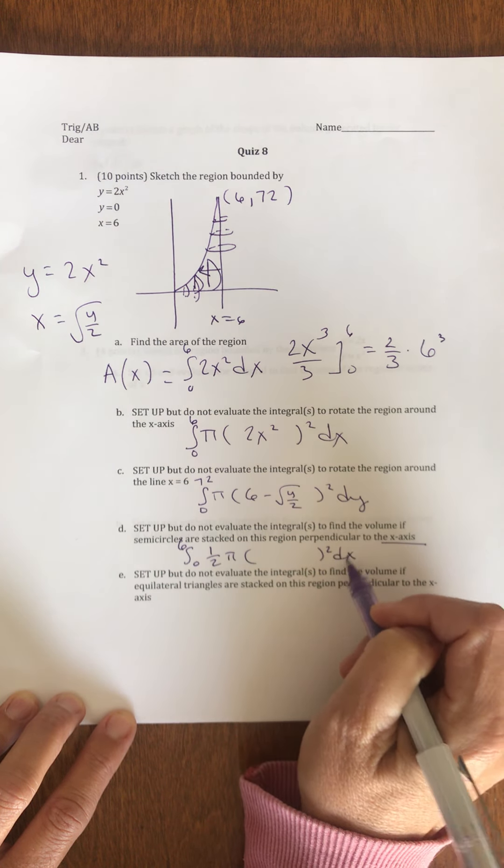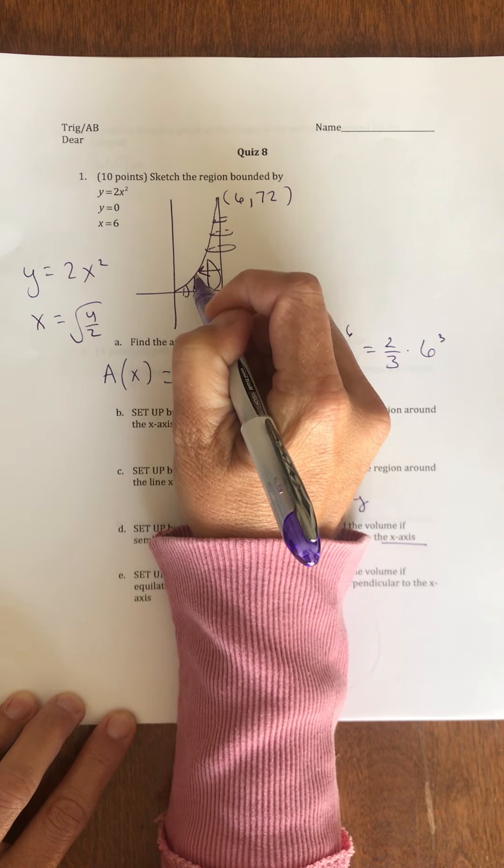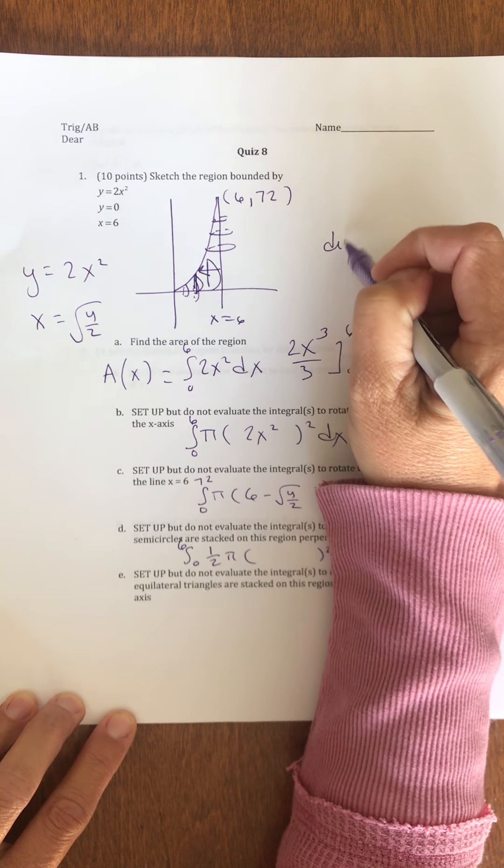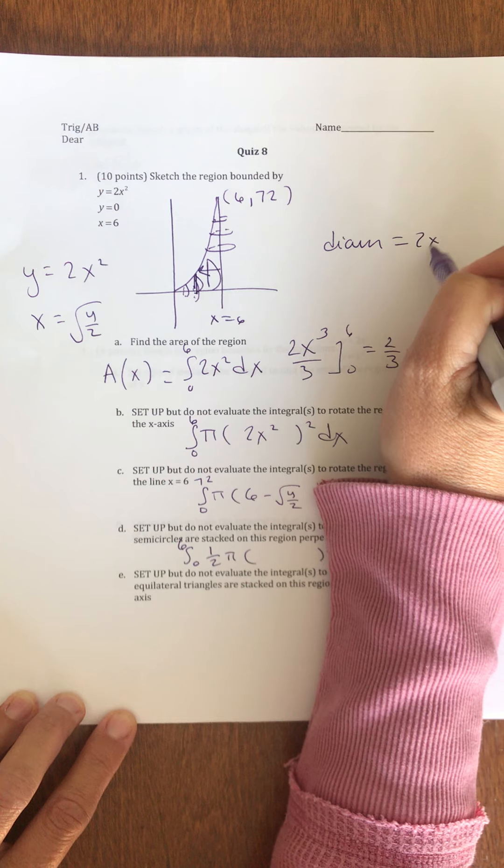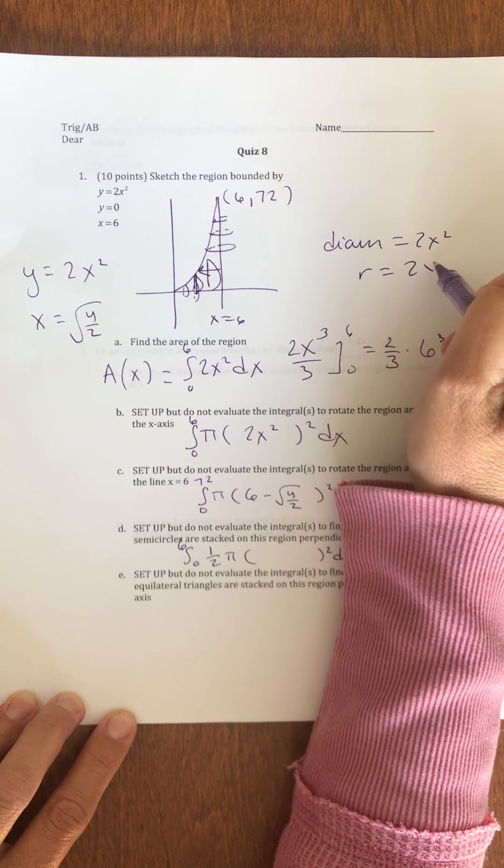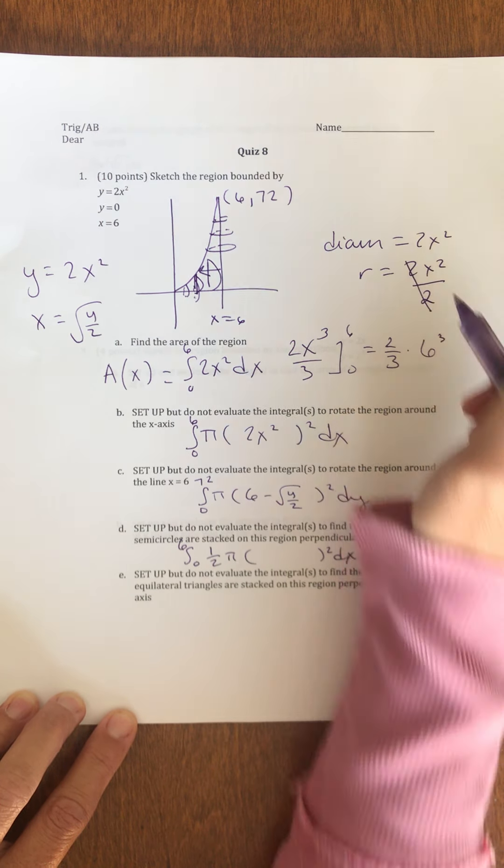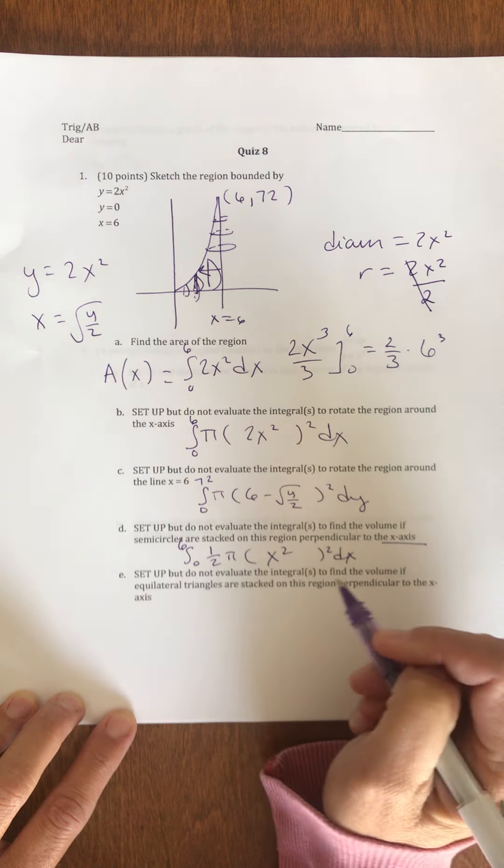Again, if 2x squared is my diameter, if my diameter is 2x squared, then my radius is 2x squared over 2. So, this just becomes x squared.